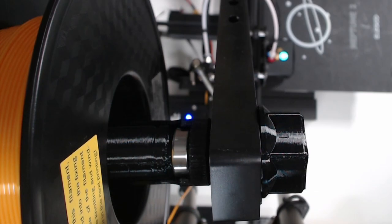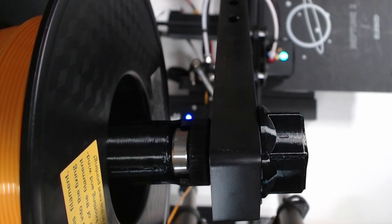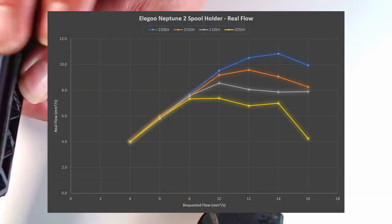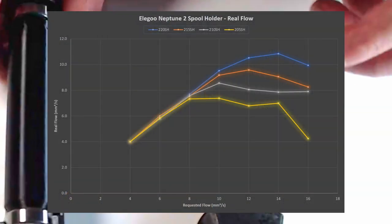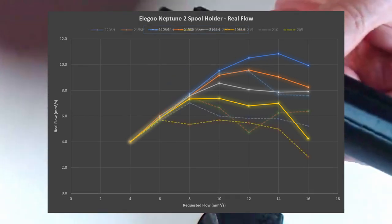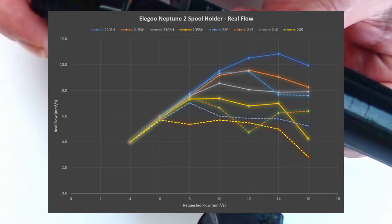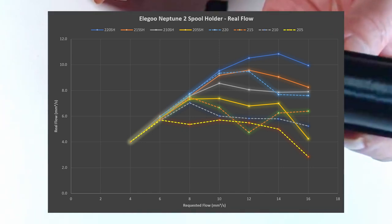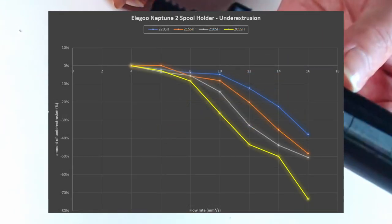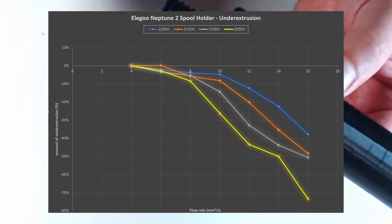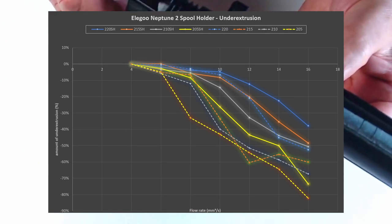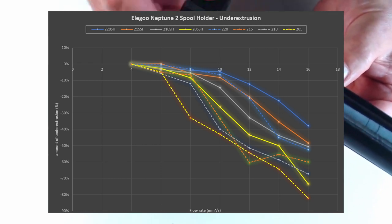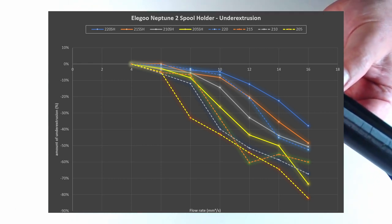It's time to do the first test with the new spool holder and compare the results. Comparing the results for the real flow shows that the effect becomes visible from 10 cubic millimeters per second. It's also visible in the diagram for under-extrusion, where the effect gets bigger with higher flow rates. Isn't that already nice for just exchanging the spool holder with a better one, which you can print yourself for maybe less than $5?